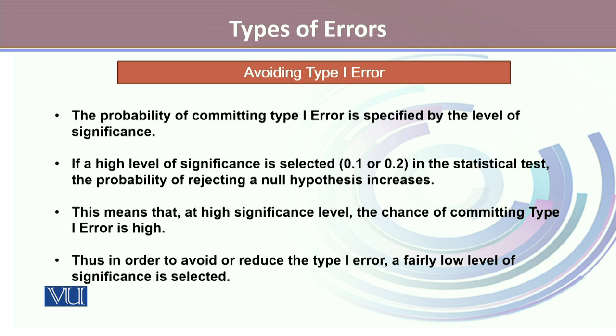Thus in order to avoid or reduce Type I error, a fairly low level of significance is selected. But it does have its own consequences too, which we will discuss.